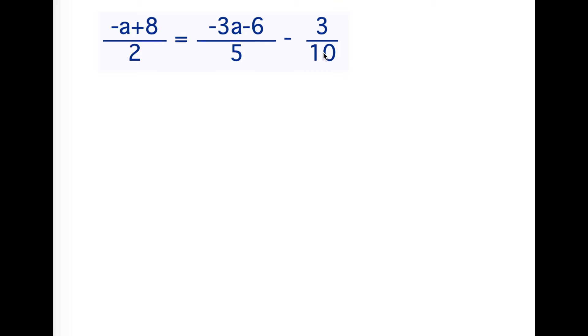What do 2 and 5 and 10 all go into? 10. Multiply each term by 10. The 10 multiplies the numerator. 10 times (-a+8) over 2 is equal to 10 times (-3a-6) all over 5 minus 10 times 3 over 10.